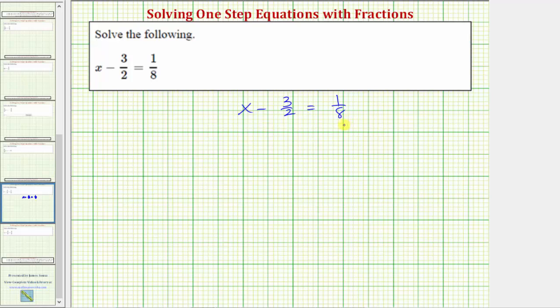In order to solve the equation for x, we need to isolate x on one side of the equation. Because the x is on the left side, our solution will be in the form of x equals some number, where this number minus 3 halves equals 1 eighth.